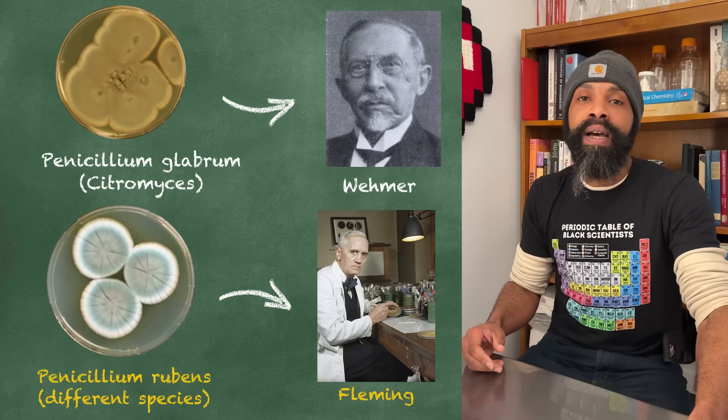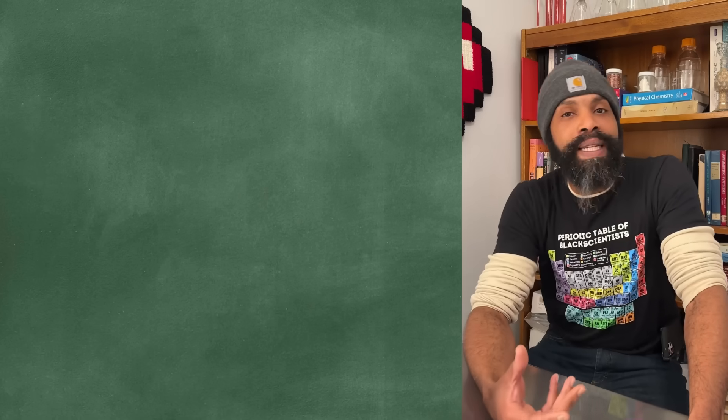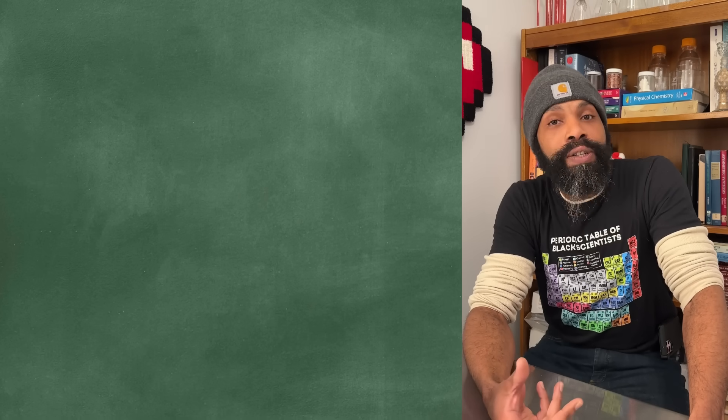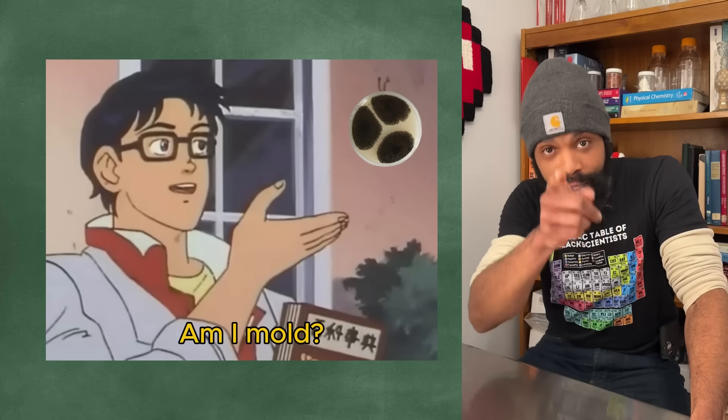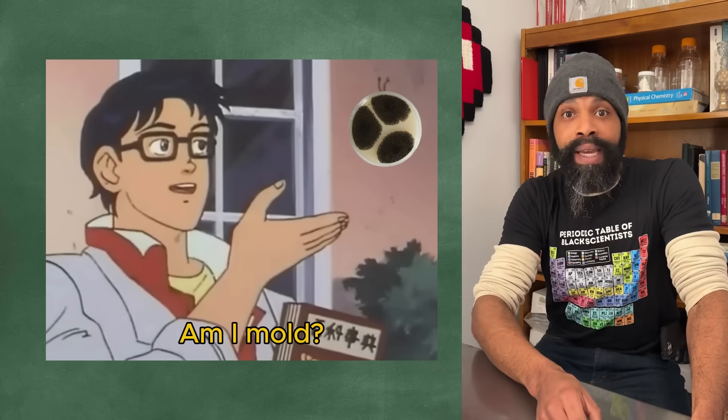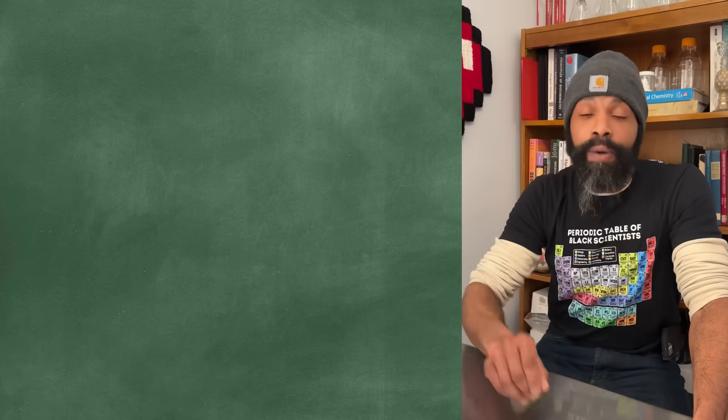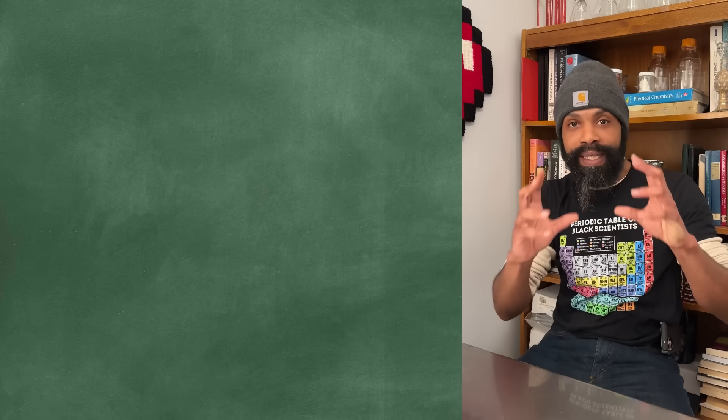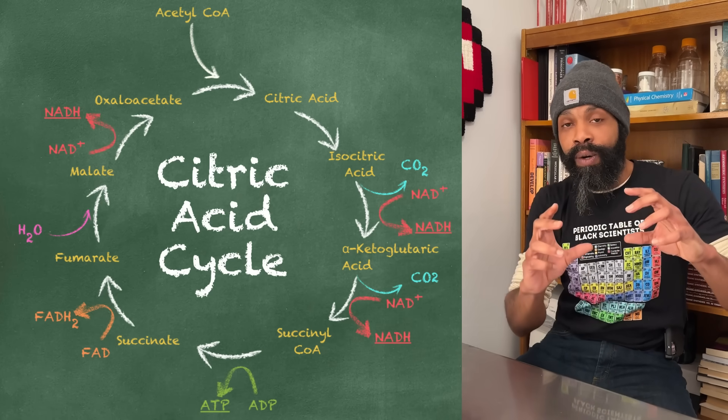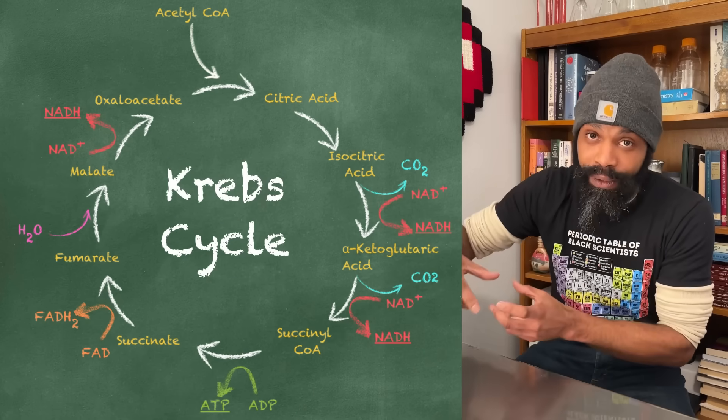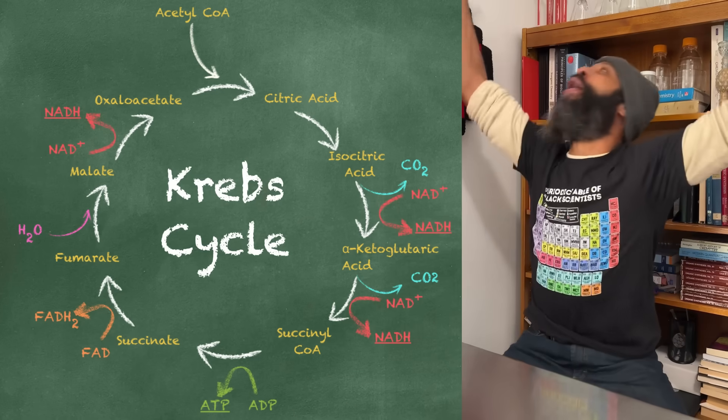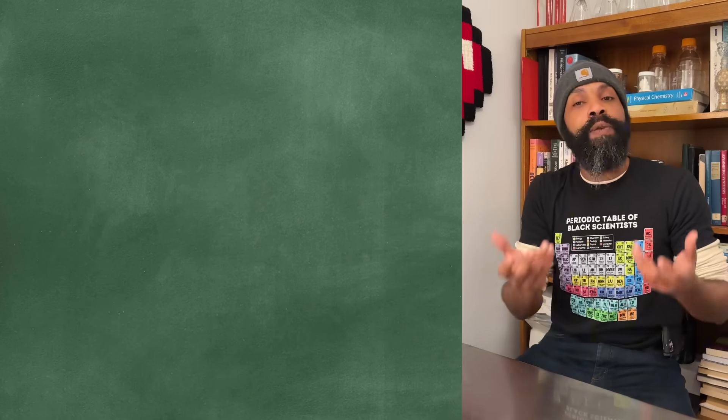But it's in part because citric acid occurs not just in citrus fruit, but in you too, and your dog, and your mom, and everybody else you know, and everything you know. Citric acid is central to this thing called the citric acid cycle, which is the same thing as the Krebs cycle.